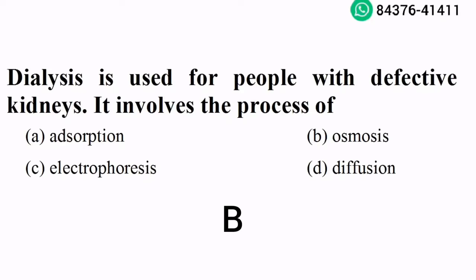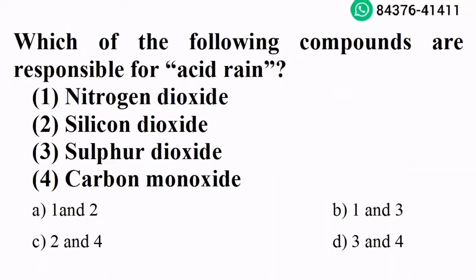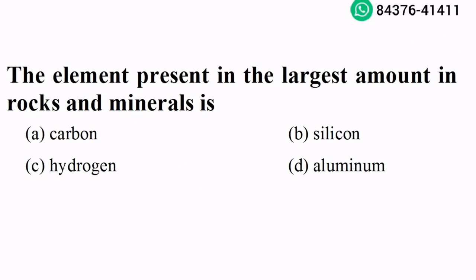Dialysis involves the process of osmosis. Option B is the right answer. Which of the following compounds are responsible for acid rain? Nitrogen dioxide and sulfur dioxide. Option B is the right answer. The element present in the largest amount in rocks and minerals is silicon. Option B is the right answer.